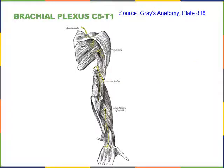A posterior view of the arm shows the axillary nerve branching off the posterior cord to excite the deltoids and teres minor. The radial nerve, the larger branch from the posterior cord, travels down the posterior brachial region to excite the triceps brachii, then continues into the antebrachial region exciting extensor carpi radialis and extensor digitorum.